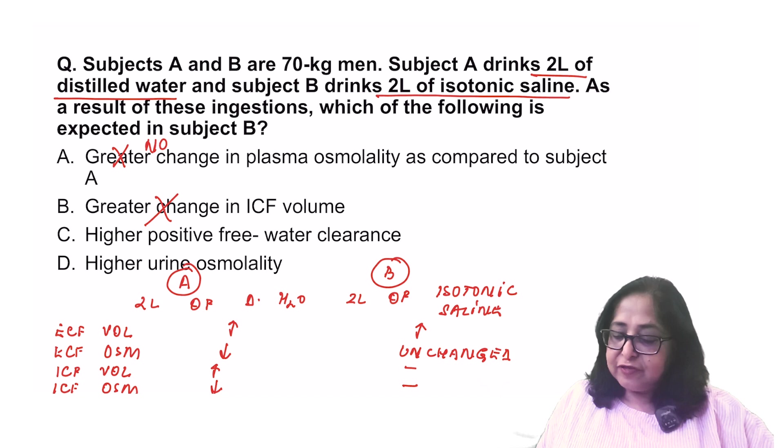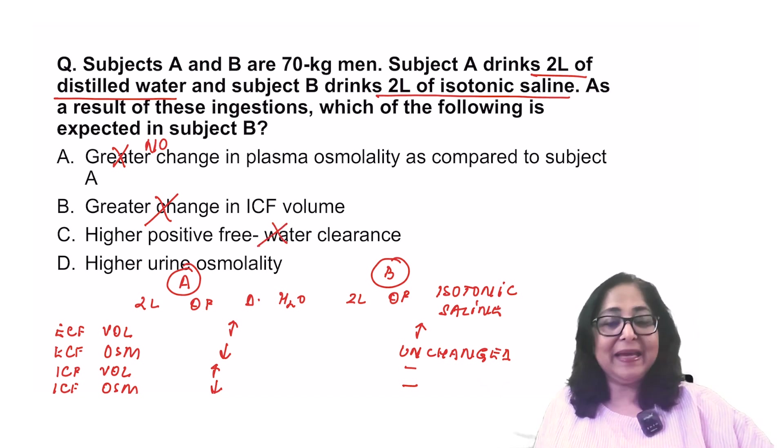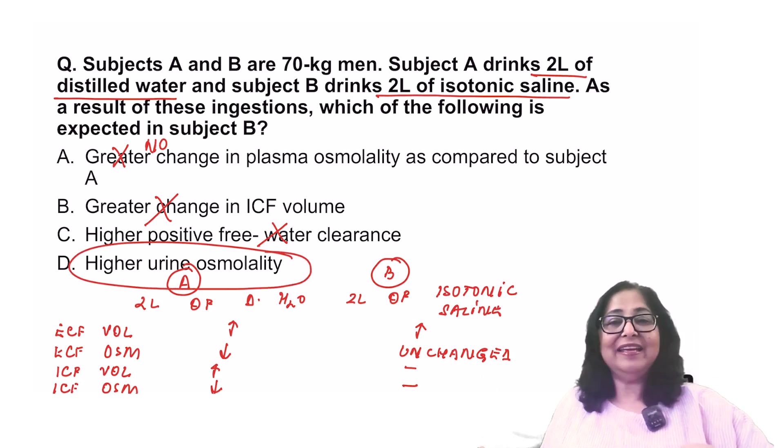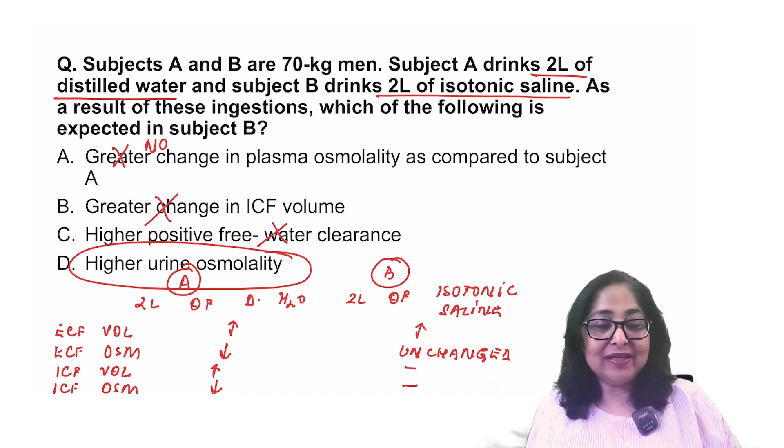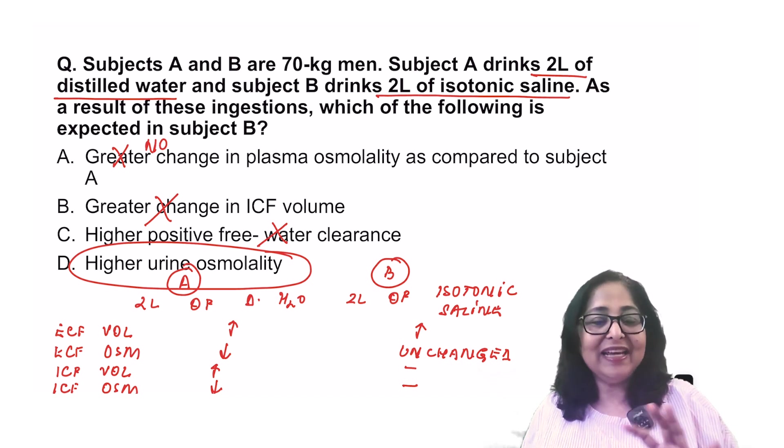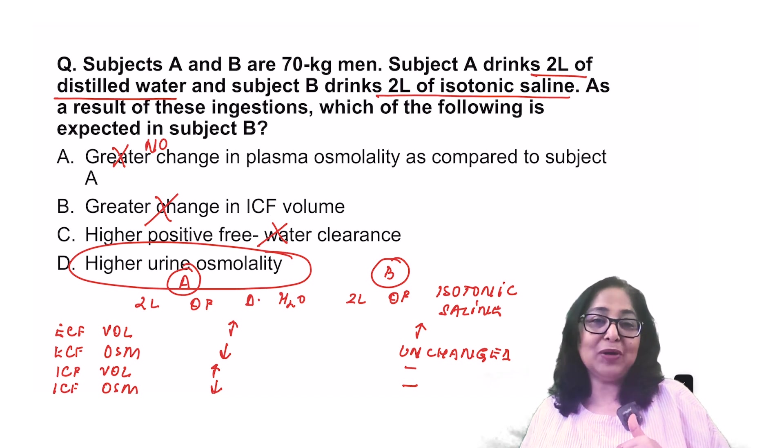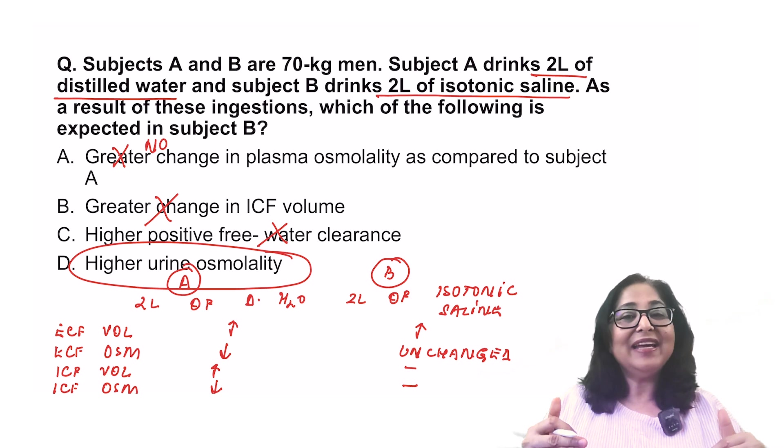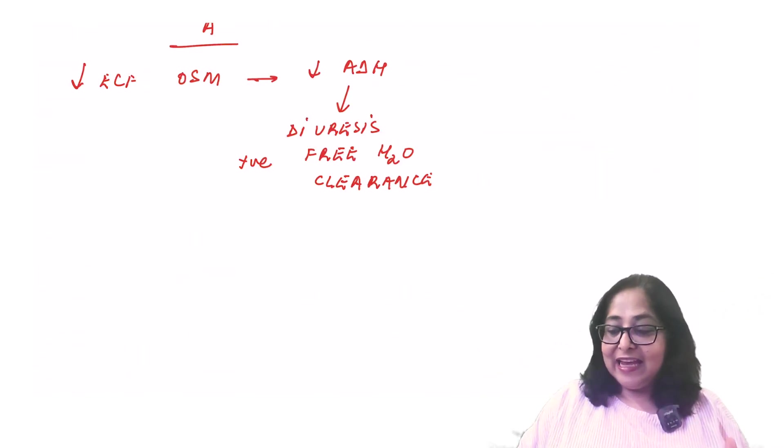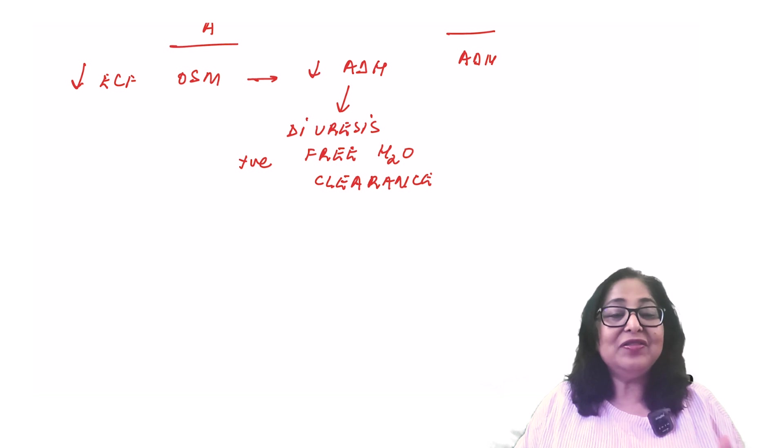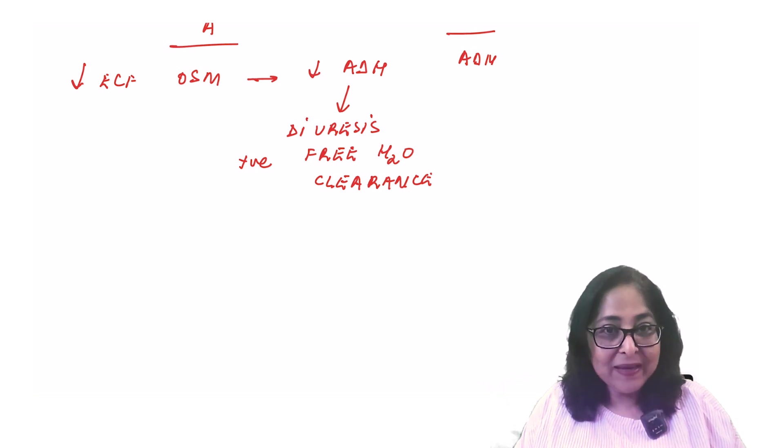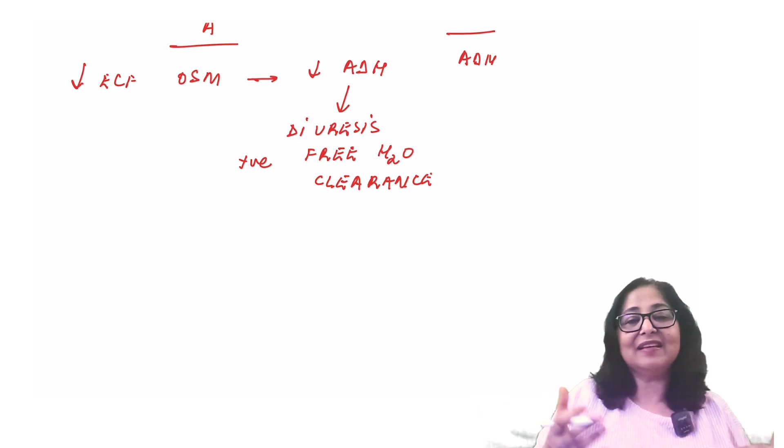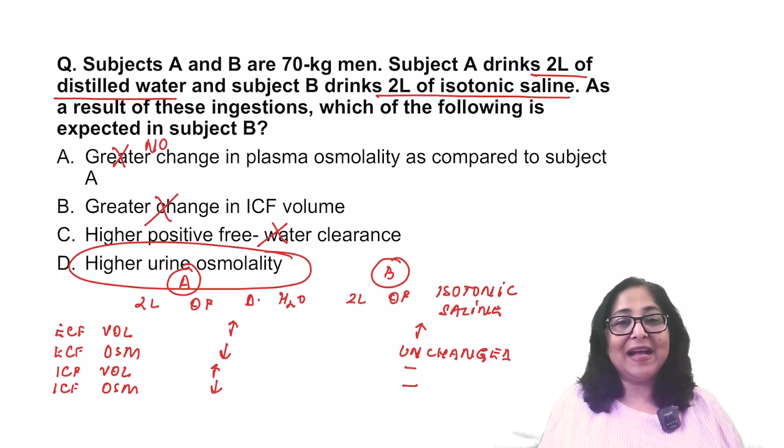So, let us go back to our options. A positive free water clearance will be in subject A, not in subject B. But the urine osmolality will be higher in B as compared to A. Why so? In A, there is reduction in the ADH secretion. In B, relatively ADH is more. Therefore, the urinary osmolality will be higher in B as compared to A. The ADH secretion is low in A. But in B, ADH secretion at least is normal. So, there will be some water absorption in the collecting ducts of subject B. So, a higher urinary osmolality as compared to A. So, answer to this question becomes D.